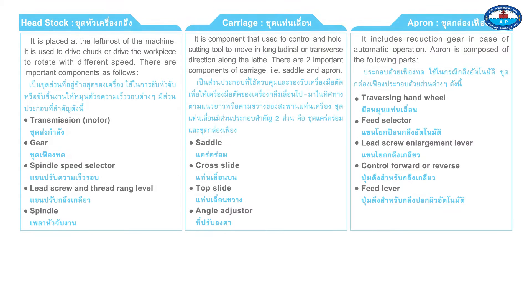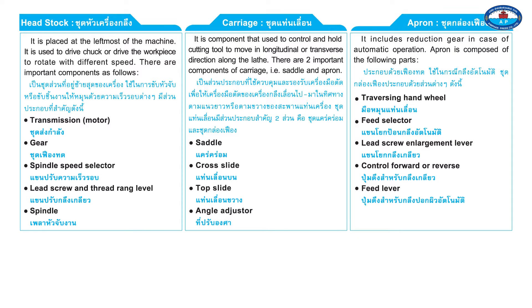Page 151: Headstock. It is placed at the leftmost part of the machine. It is used to drive the chuck or drive the workpiece to rotate at different speeds. Its important components include: transmission motor, gear, spindle, speed selector, lead screw, and thread range lever.